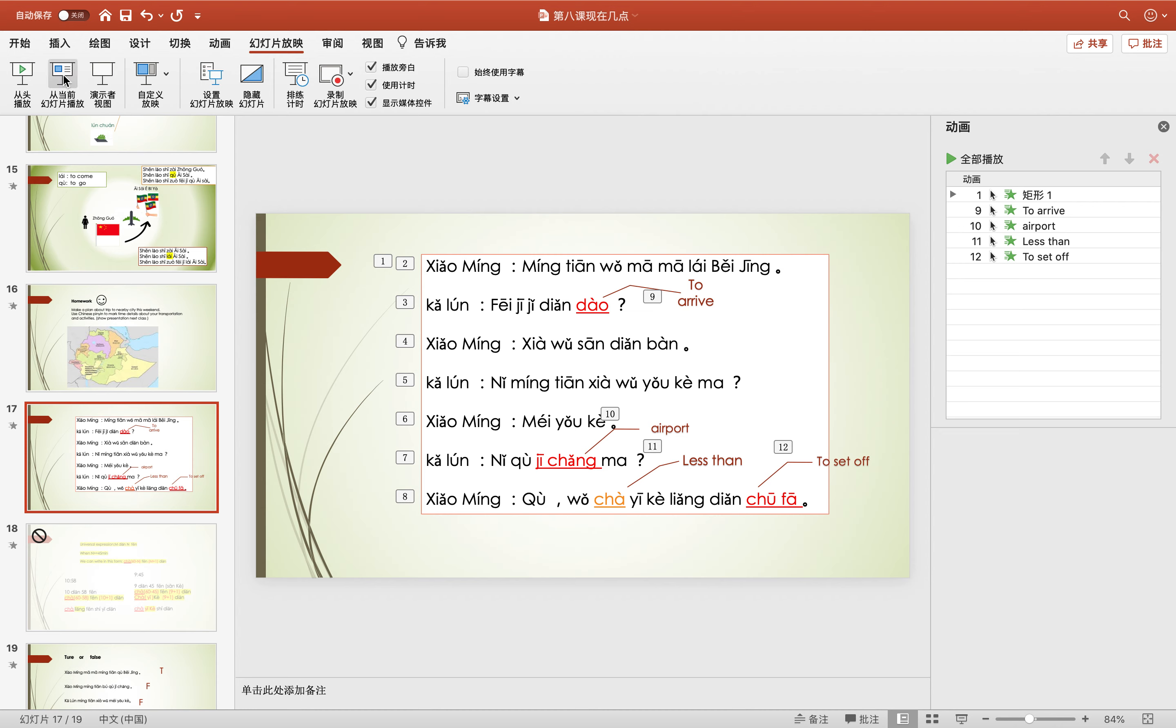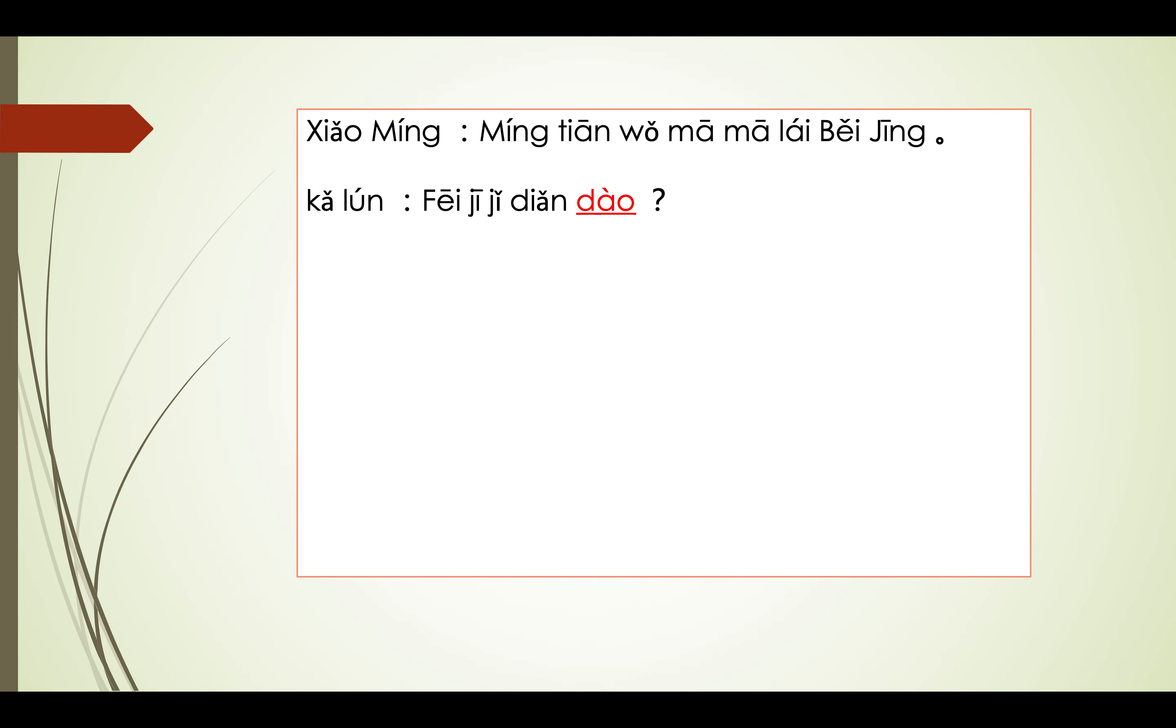Everyone, welcome back to our Chinese class. It's the last class for lesson 8. Today we are going to learn the new dialogue in our textbook. This is a dialogue between Xiaoming and Ka-re. What are they talking about? Let's see. First of all, we learn the new words today.